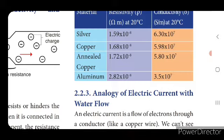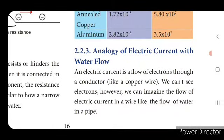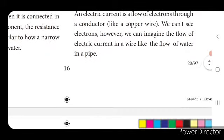Analogy of electric current with water flow. We are explaining electric current in terms of water flow. Electric current is a flow of electrons through a conductor. Only materials that allow electric current to pass through them — we call those conductors. All metals are good conductors of heat and electricity. We can't see electrons; however, we can imagine the flow of current in a wire like the flow of water in a pipe.